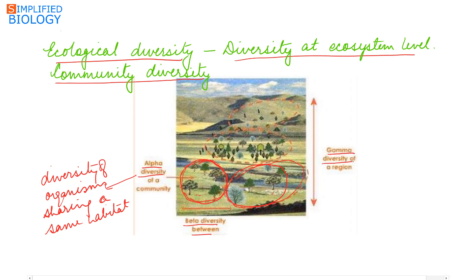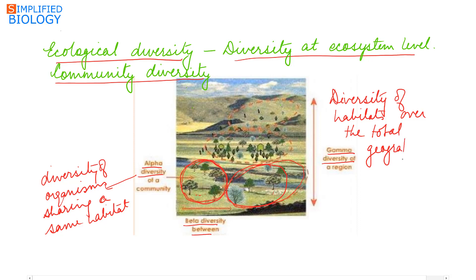The third level is gamma diversity of a region, which means diversity of habitats. The species diversity of each habitat in a region differs from one another, and the diversity of habitats across the total geographical area forms the gamma diversity of the region.